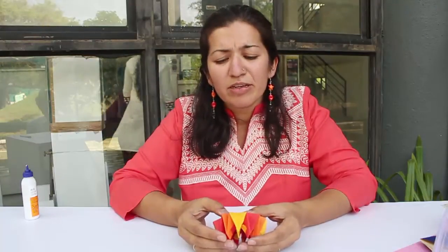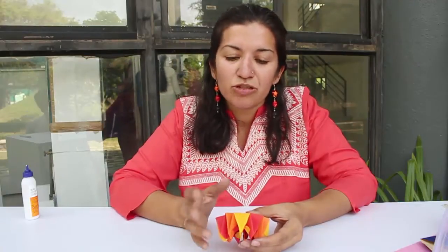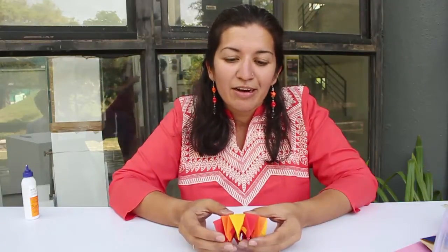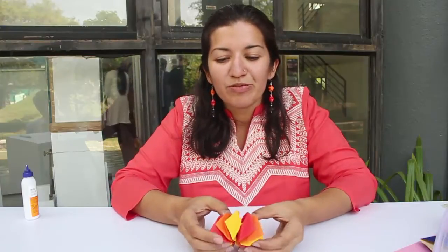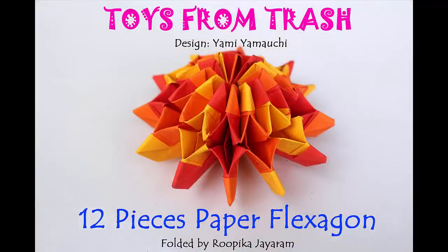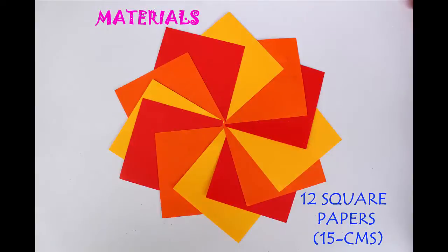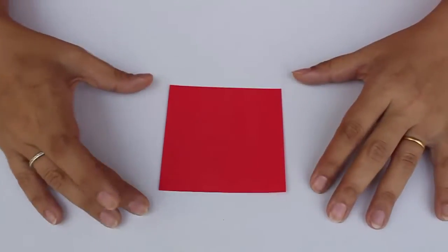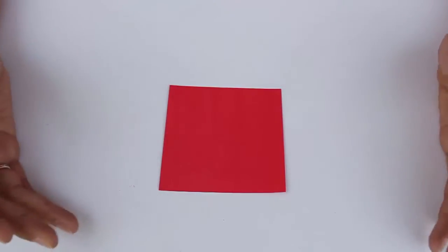Making this size would be a bit of a challenge. This flexagon called Fireworks is made with 12 pieces of paper. We start with a piece of paper which is about three and a half inches.